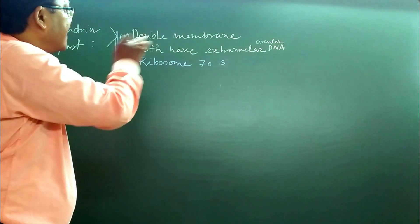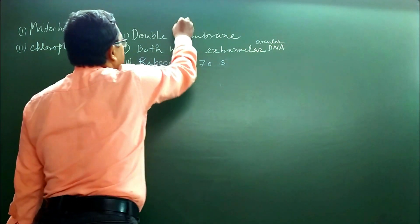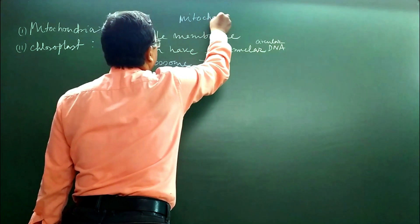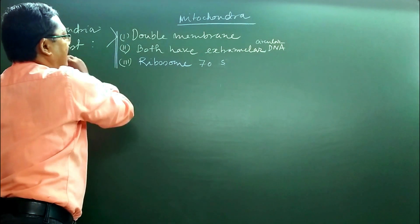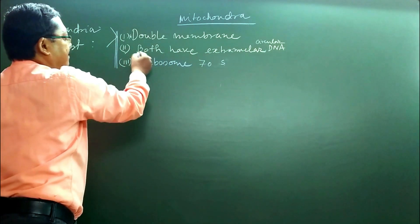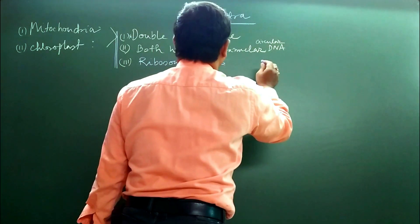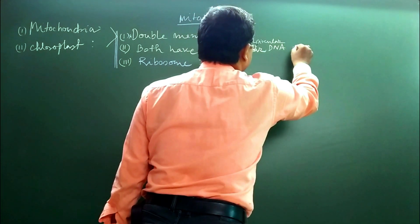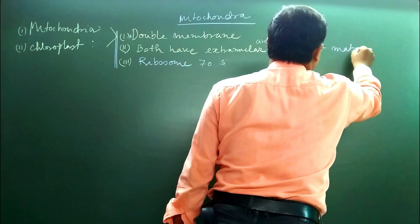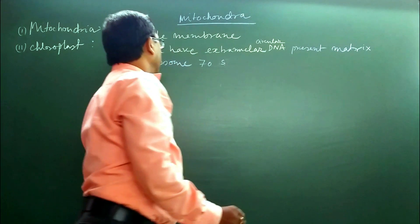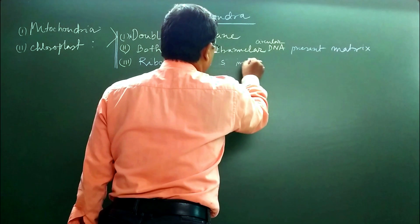Besides these common characteristics, we consider first mitochondria. The characteristics of mitochondria: first, double membrane. Second, both have extra circular DNA — the extra-nuclear DNA present in the matrix of the mitochondria. And in the matrix, 70S ribosomes are also present.